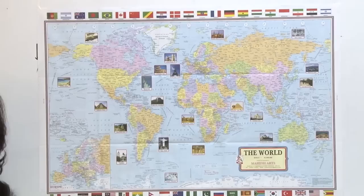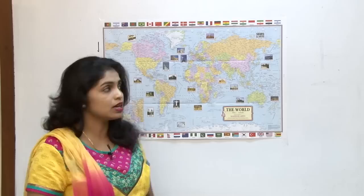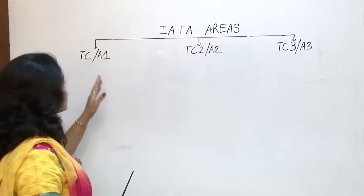So this entire is our world as we know it. But IATA, for taking care of air tickets and civil aviation, has divided the world not into continents but into IATA areas. So let us have a look at what these areas are. IATA has divided the world into three major areas: IATA area 1, IATA area 2, and IATA area 3.